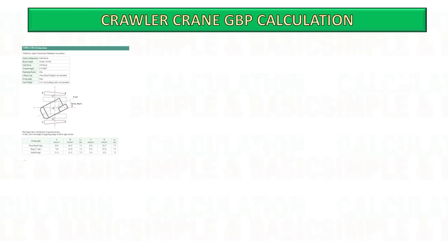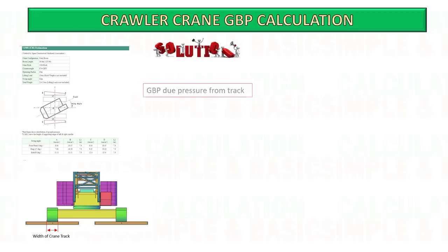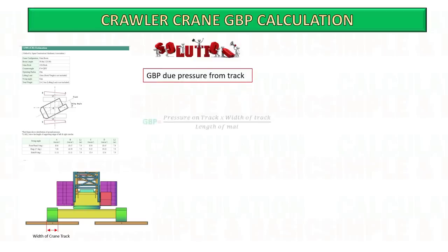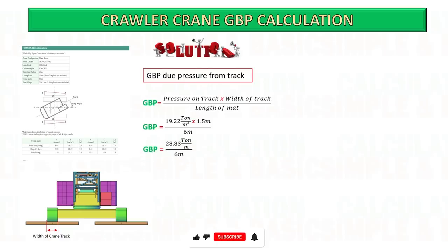Here are the typical calculations of GBP under the crane mats using this method. You are considering that the strength of your crane mats is able to withstand the pressure from the crawler track, that it can distribute the pressure evenly underneath the mats area, and also that the allowable ground bearing pressure on site is able to withstand the pressure from this result.